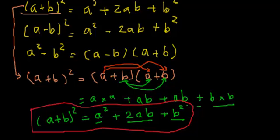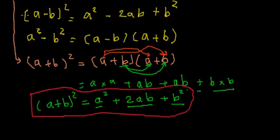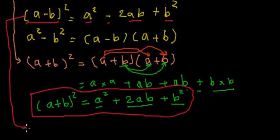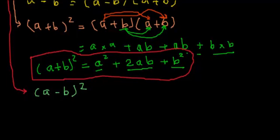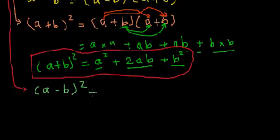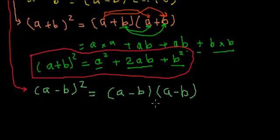Now let's talk about the second identity, which says (a-b)² = a² - 2ab + b². The left-hand side is (a-b)², which is nothing but (a-b) multiplied by (a-b).